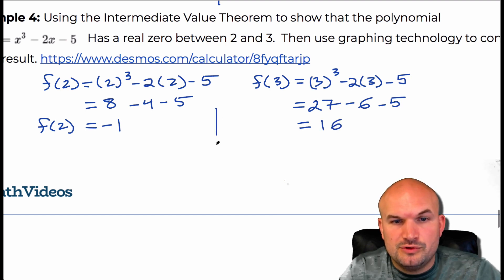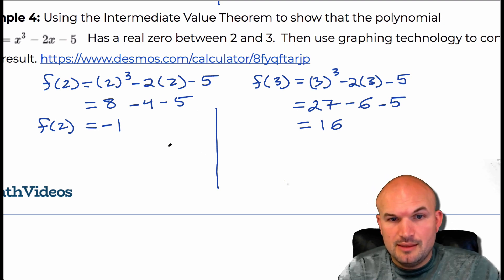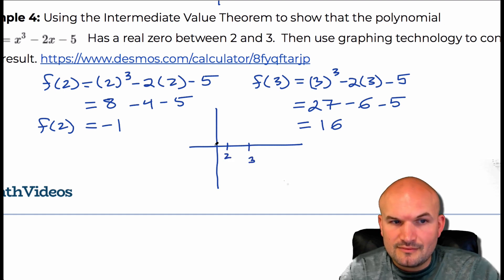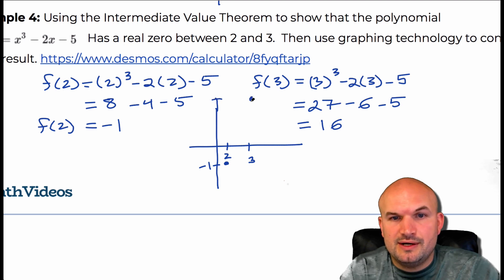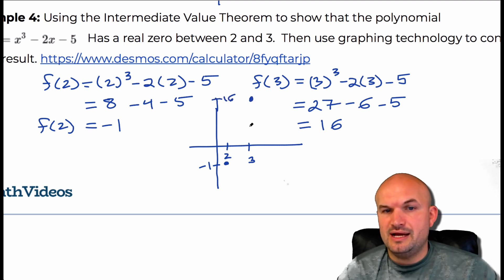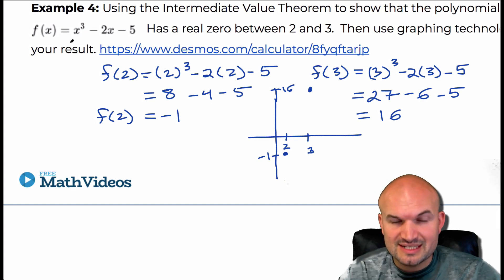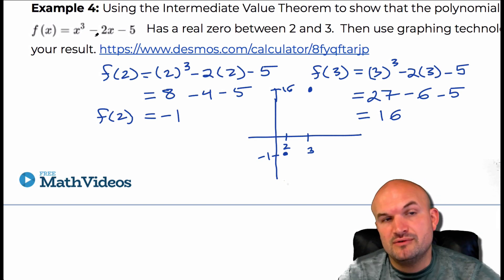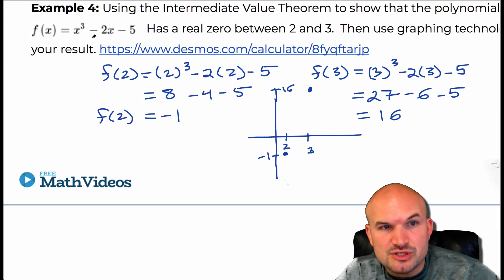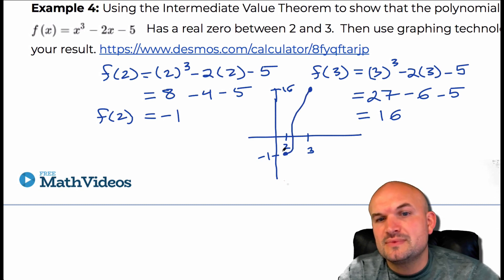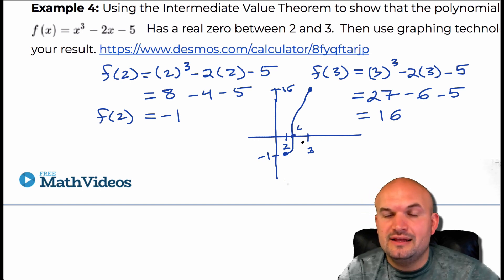If we look at this graphically, between 2 and 3, at x = 2 we're dealing with a value of negative 1, and at x = 3 we're dealing with a value of 16. Since this function is continuous — there are no discontinuities, no holes, no asymptotes, no radicals or anything that would create a discontinuity — we don't know exactly what the graph looks like, but we know it's going to be continuous, and there has to be a value C where it crosses zero.